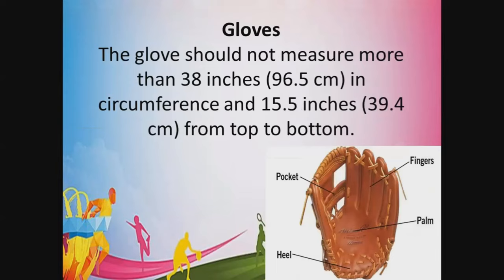Next is gloves. The glove should not measure more than 38 inches or 96.5 cm in circumference, and 15.5 inches or 39.4 cm from top to bottom. Players wear the glove on the left hand because the left hand is used for fielding or catching the ball, while the right hand is used for throwing. It is important that no glove is worn on the right hand, because they use the right hand to throw the ball — catching and throwing always go together.